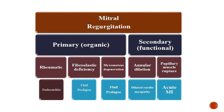Mitral regurgitation can be primary or secondary. Primary MR may be due to rheumatic disease, fibroelastic deficiency, Ehlers-Danlos syndrome, myxomatous degeneration as seen in Marfan syndrome, or infective endocarditis causing mitral regurgitation secondary to vegetations or perforations. Secondary mitral regurgitation may be due to annular dilatation, calcification of the annulus, or papillary muscle rupture secondary to acute MI.